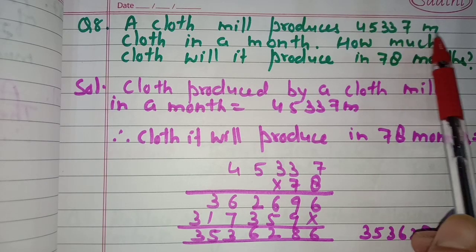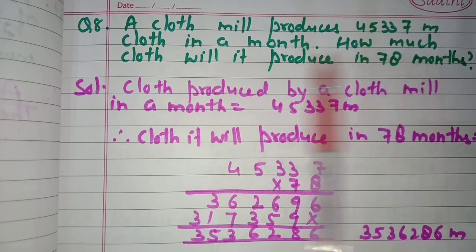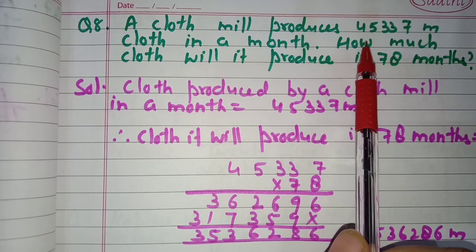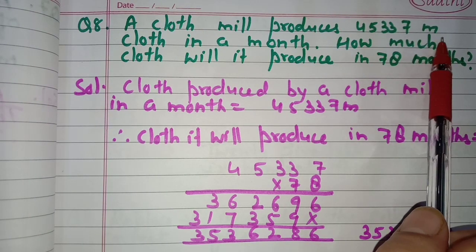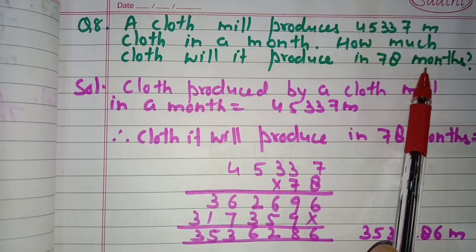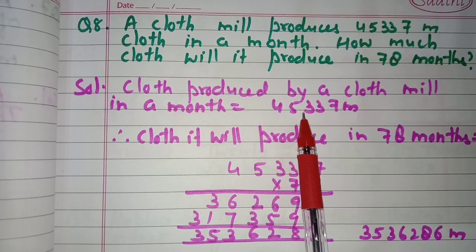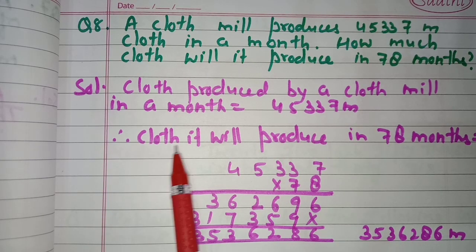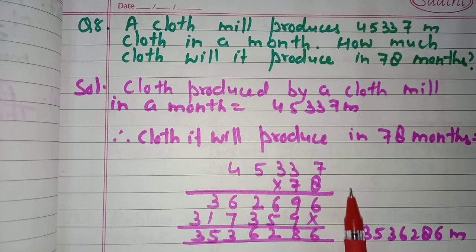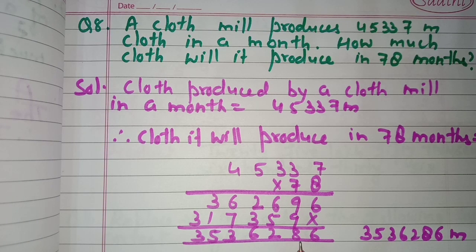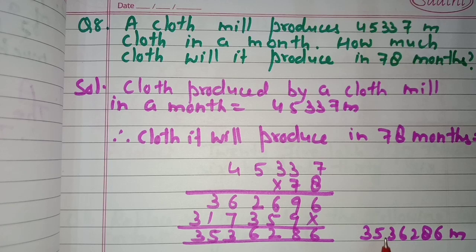Question number eight: a cloth mill produces 45,337 meters of cloth in a month. How much cloth will it produce in 78 months? Cloth produced in one month: 45,337 meters. Therefore, cloth in 78 months — we multiply 45,337 by 78 and get 35,36,286 meters.